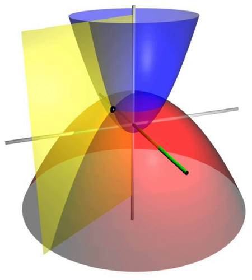In geometry, a coordinate system is a system that uses one or more numbers, or coordinates, to uniquely determine the position of the points or other geometric elements on a manifold such as Euclidean space.